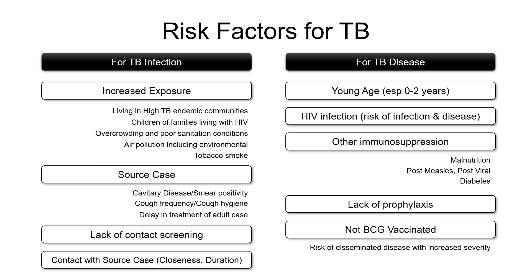The risk factors for TB disease developing include: young age below two years, HIV co-infection, immunosuppression from malnutrition, post-measles state, post-viral diseases, or diabetes. Lack of prophylaxis obviously increases the risk of developing TB disease. If the person is not BCG vaccinated, the risk of disseminated disease with increasing severity is present, since BCG protects against severe childhood tuberculosis.